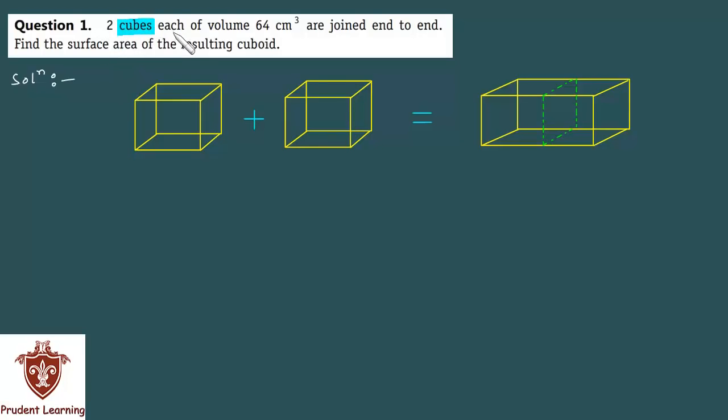2 cubes each of volume 64 cm³ are joined end to end, find the surface area of the resulting cuboid.